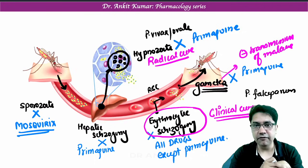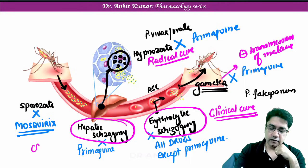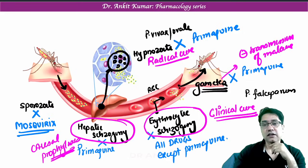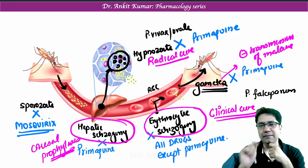When you kill hepatic schizogony, this is known as causal prophylaxis — and again we give primaquine. So to summarize everything: in clinical cure, primaquine is not used.